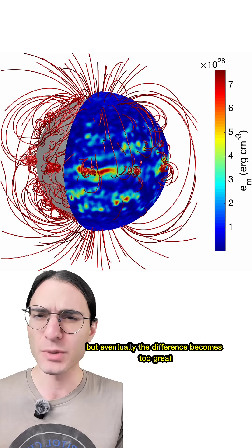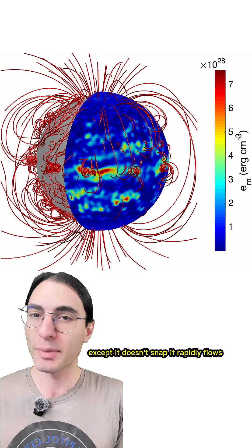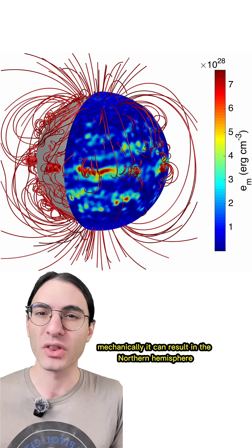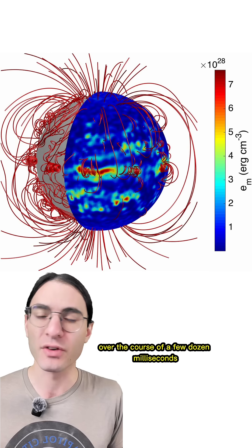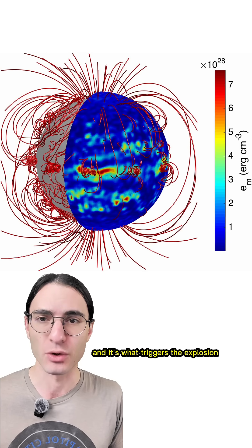But eventually, the difference becomes too great and the crust finally snaps. Except it doesn't snap, it rapidly flows, most often by a twisting motion of the entire star. Mechanically, it can result in the northern hemisphere twisting a few meters relative to the southern hemisphere over the course of a few dozen milliseconds. This is the starquake, and it's what triggers the explosion.